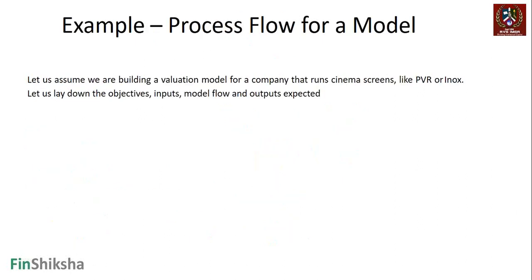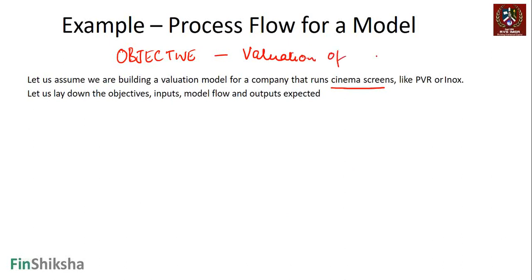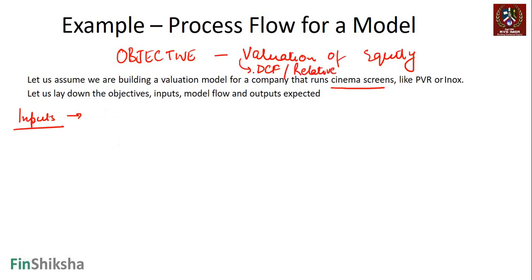Let's create this entire process flow using a particular example. Let us assume that we are building the valuation model for a company that runs cinema screens like a PVR or INOX. Let's lay down the objectives. The objective here is valuation - we have to value the equity of a company. The moment we lay down this objective of valuation, we have to also define how we are going to do the valuation - is it going to be discounted cash flow valuation or relative valuation? Let's assume we are doing DCF.